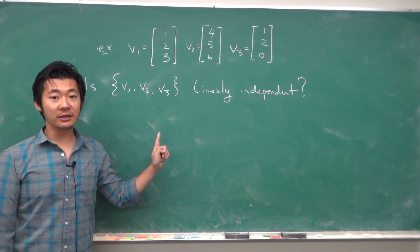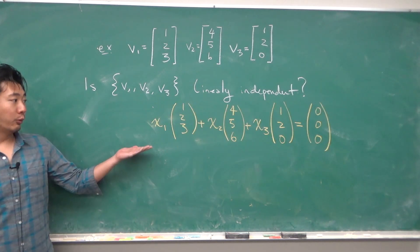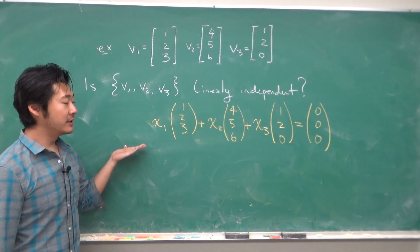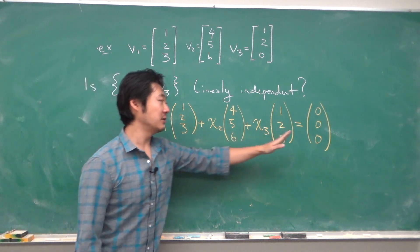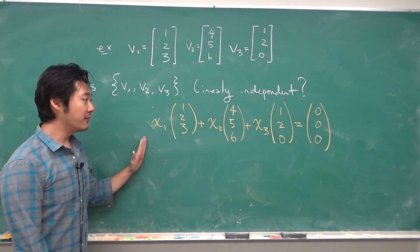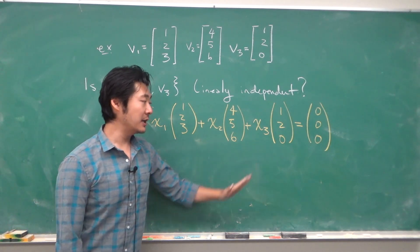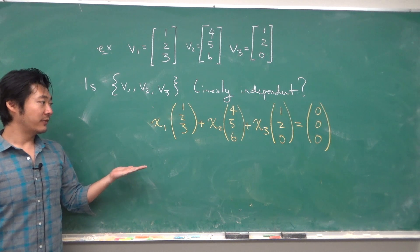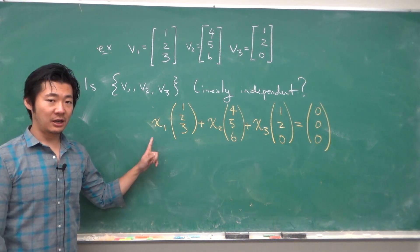We write down the linear combination of the given vectors and set it equal to a homogeneous problem, that means set this equal to 0. If the only solution is x1=x2=x3=0, then it means that the vectors are linearly independent. To solve this, we convert it to its augmented form and row reduce.